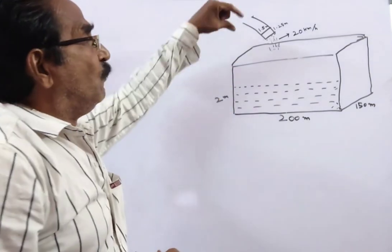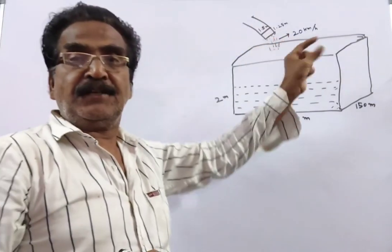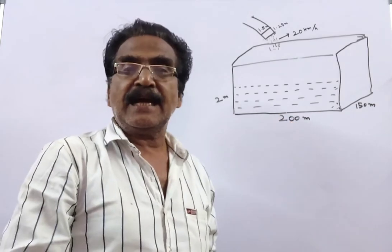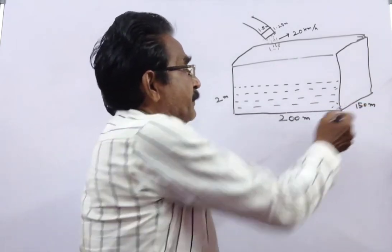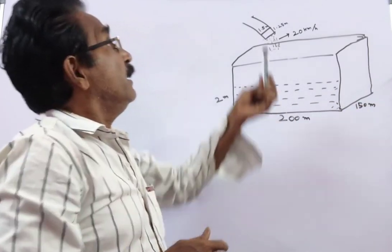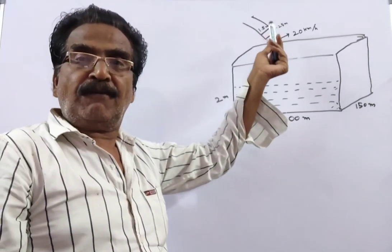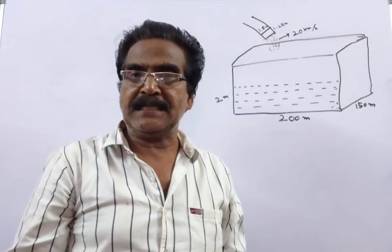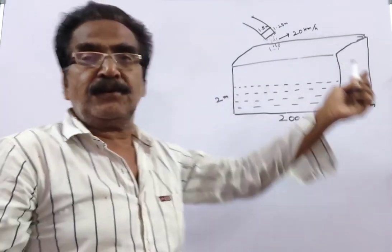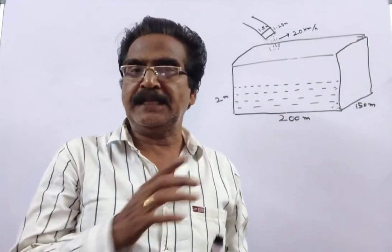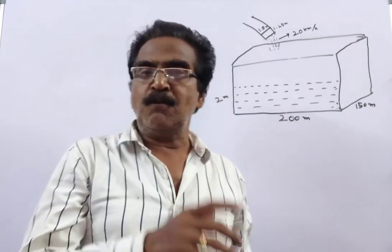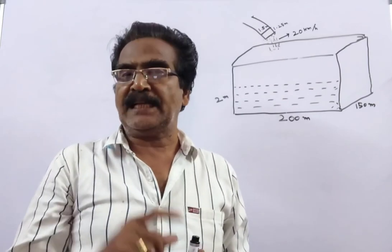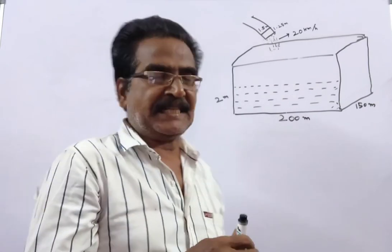See friends, water flows into a rectangular tank of 200 meters and 150 meters through a rectangular pipe of 1.5 meters and 1.25 meters at a speed of 20 kmph. The question is: in how much time will the level of water rise by 2 meters?